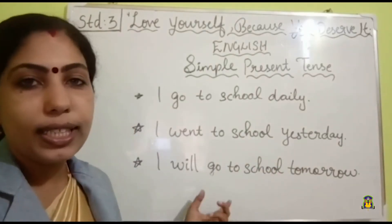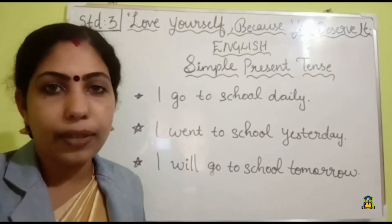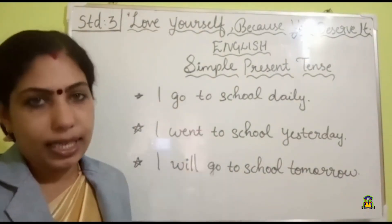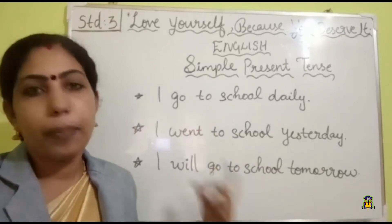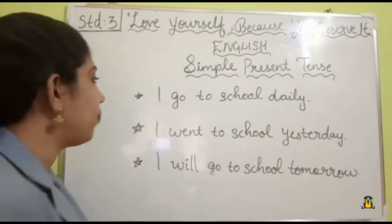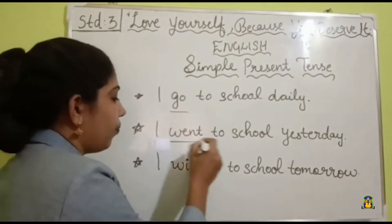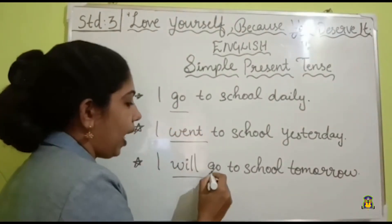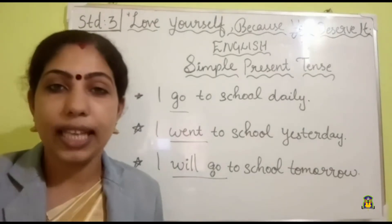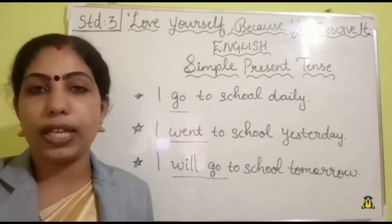In this sentence we are talking about something going to happen in the future. Every sentence is either in present tense, past tense, or future tense. And it is the verb in the sentence which shows the time, and these verbs decide the tense of a sentence.